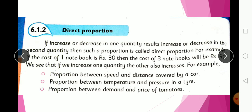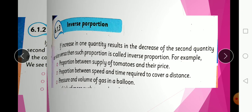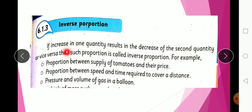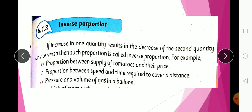In inverse proportion, an increase in one quantity results in a decrease in another quantity, or vice versa. Examples include: the proportion between supply of tomatoes and their price; between speed and time required to cover a distance; and between pressure and volume of gas. If one quantity increases and the other decreases, that is inverse proportion.